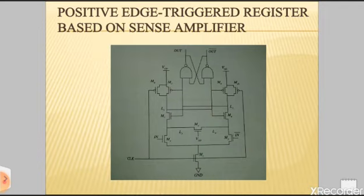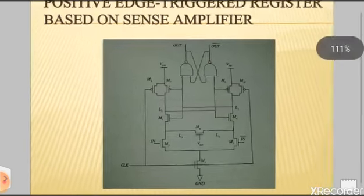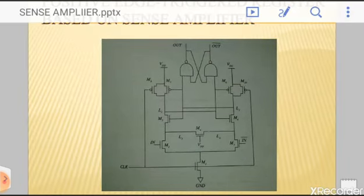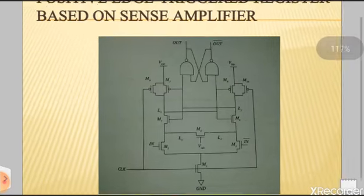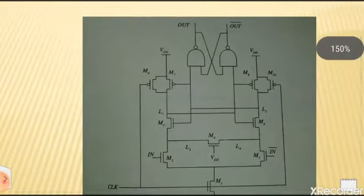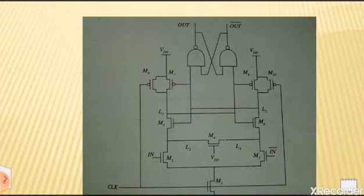How to perform the sense amplifier based register? This is a positive edge trigger register based on sense amplifier circuits. First, the front-end consists of a cross-coupled inverter whose outputs are pre-charged using devices M9 and M10 during the low phase of the clock. Now, P-MOS transistors M7 and M8 are turned off and the NAND flip-flop is holding its previous state.